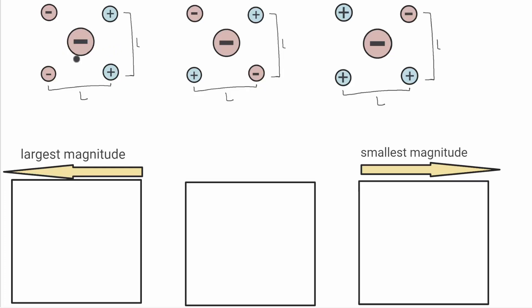In this problem, we have one large charge particle surrounded by four smaller charge particles. Each of these smaller charge particles have the exact same magnitude, but as you can see, they all have different charges. We need to find which configuration has the greatest magnitude of force applied to the center larger charge particle.